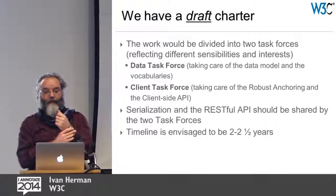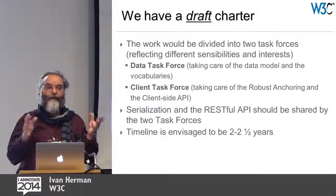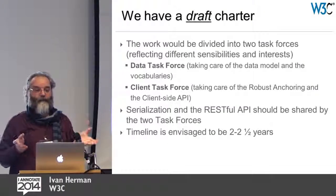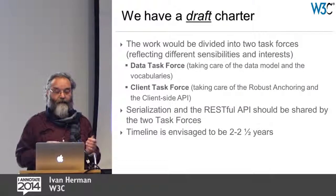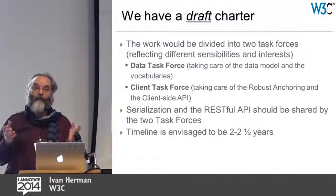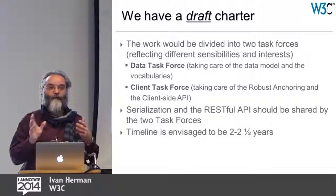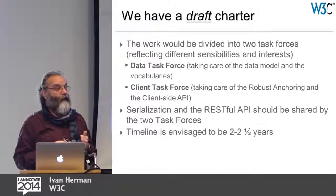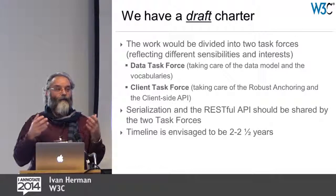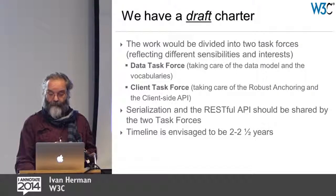The plan is that the working group would be divided, not disjoined, into essentially two task forces. One takes care of the data model, vocabularies, and serialization. The client-side task force handles the anchoring part and the JavaScript API. The HTTP API and serialization are shared across both. At the moment, the time envisaged is two to two and a half years, which includes all the rigorous testing — test suites first, and then the testing.